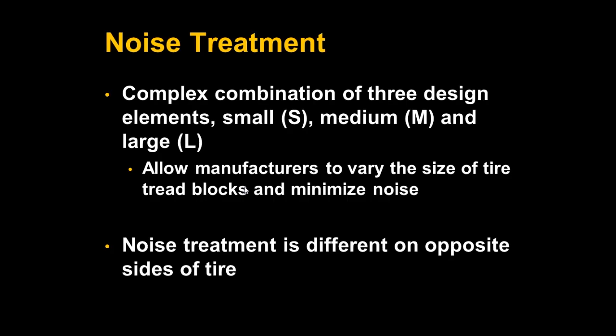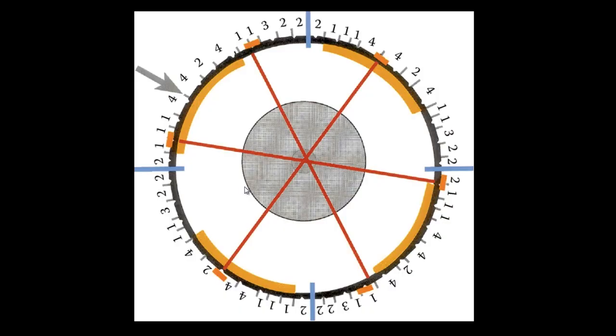The pattern of noise treatment can be really helpful for finding characteristics to help match a tire tread impression from an accident or crime scene with a tire from a suspect vehicle. The image here represents a whole tire tread, and you can clearly see the complex arrangement of tread block sizes, numbered one through four, which can be really helpful in matching tread patterns.